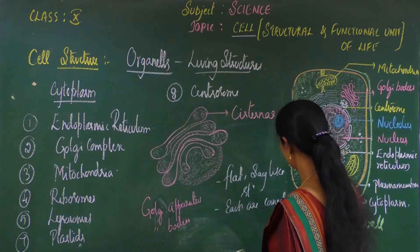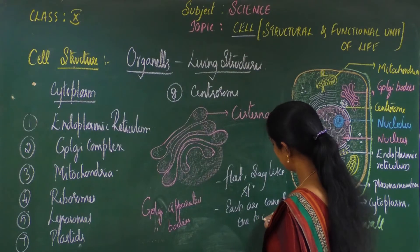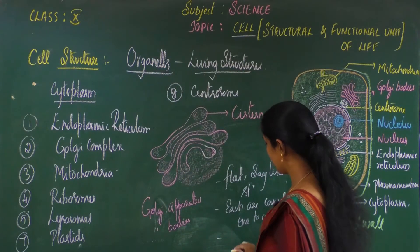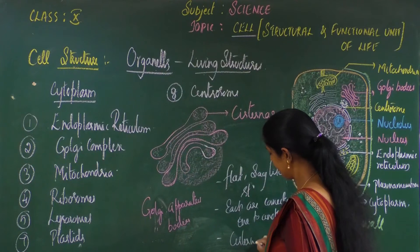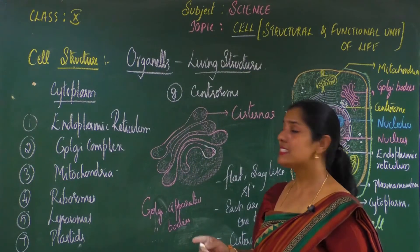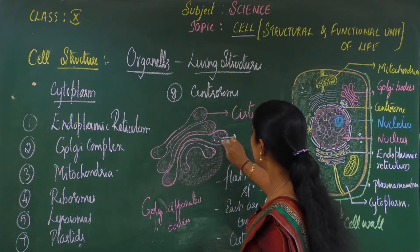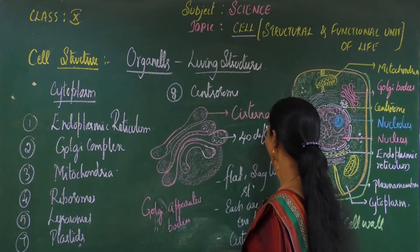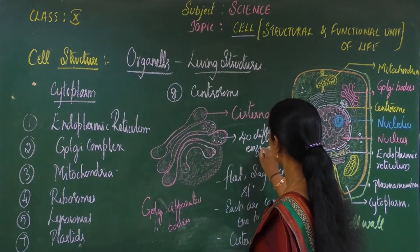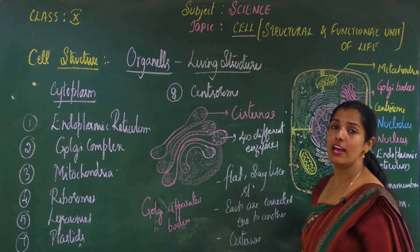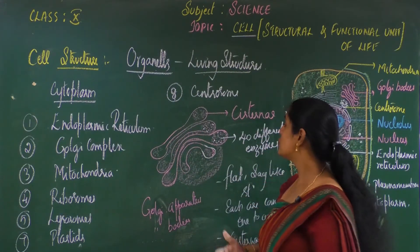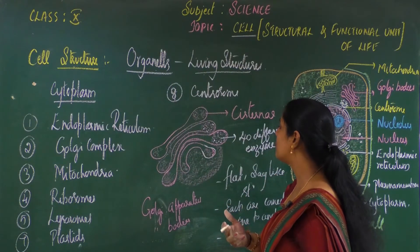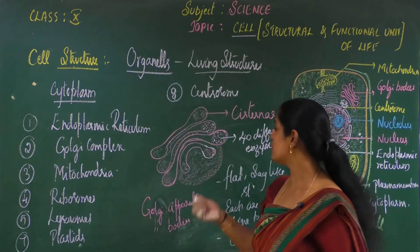The Golgi complex is a flat sac-like structure with each sac connected one to another. The end portions of these sacs are bulged and are called cisternae. The cisternae contain 20 to 40 different types of enzymes which have very important catalytic functions and perform different kinds of degradative functions.